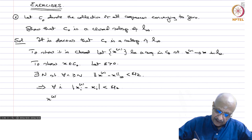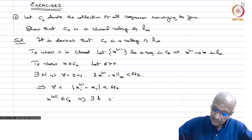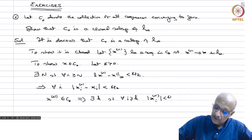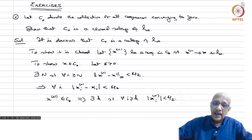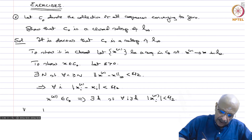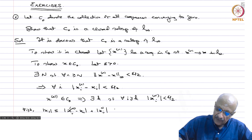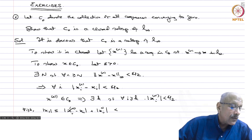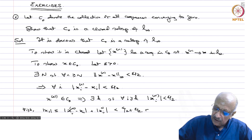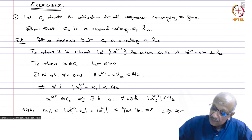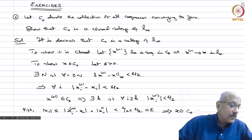Also, xₙ belongs to C₀. Therefore, there exists a k such that for all i ≥ k, we have |xₙ(i)| < ε/2, since it is a sequence going to 0. Therefore, for all i ≥ k, |x(i)| ≤ |xₙ(i) − x(i)| + |xₙ(i)| ≤ ε/2 + ε/2 = ε. Therefore, for all i > k, |x(i)| < ε, which means x belongs to C₀. This completes the proof.